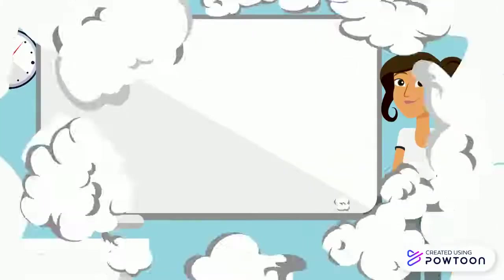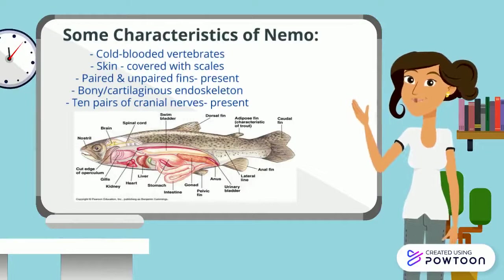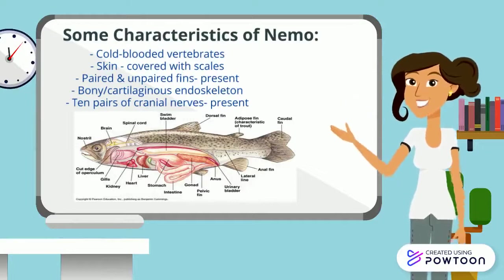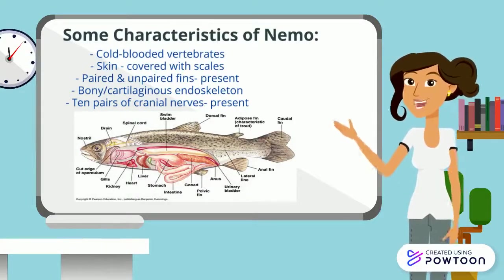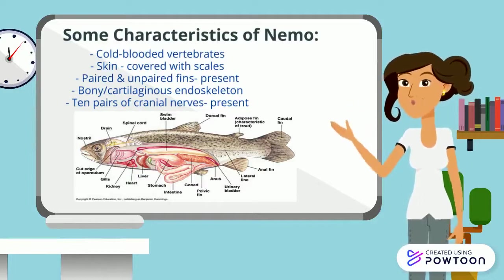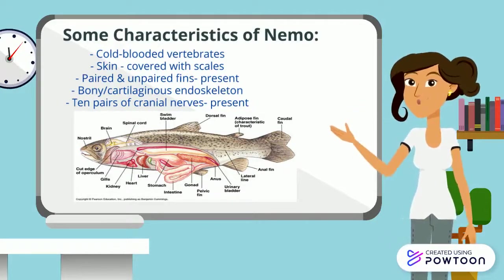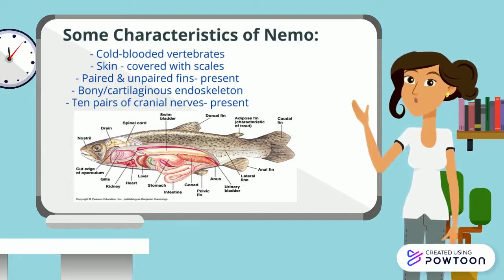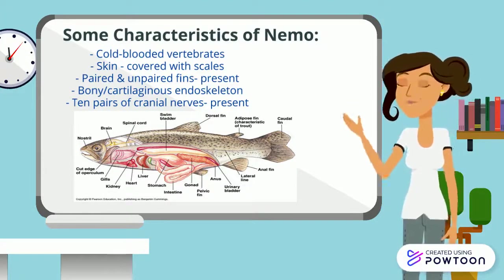Some characteristics of Nemo: it is a cold-blooded vertebrate, which means it cannot control its own body temperature. Its skin is covered with scales for protection. Paired fins like pectoral and pelvic, and unpaired fins like dorsal, caudal, and anal fins are present, which help in its motion and stability.